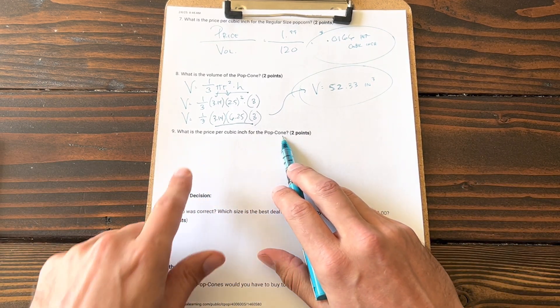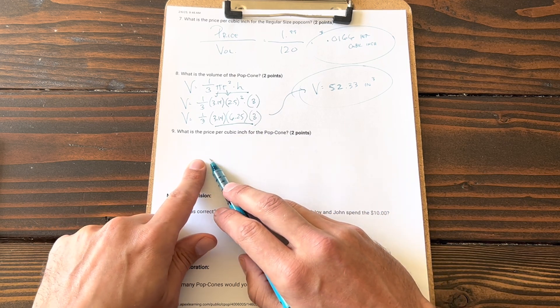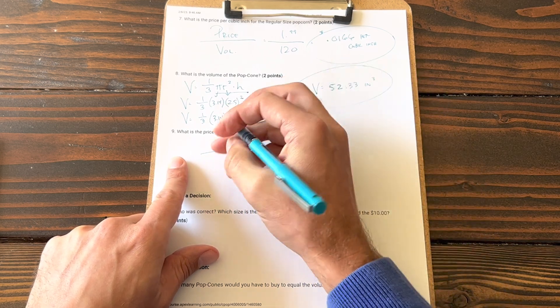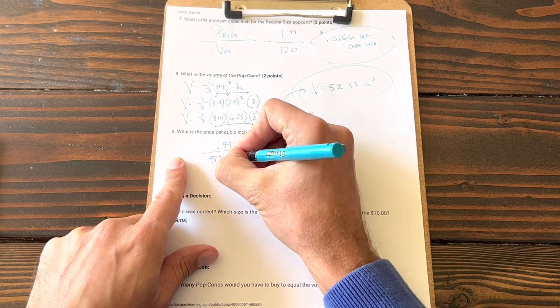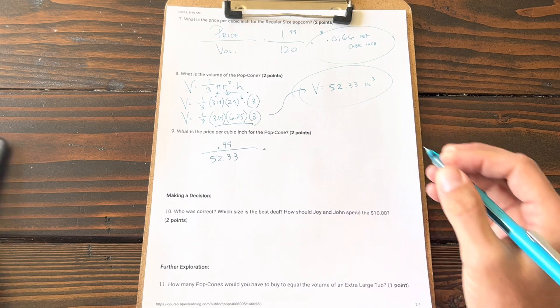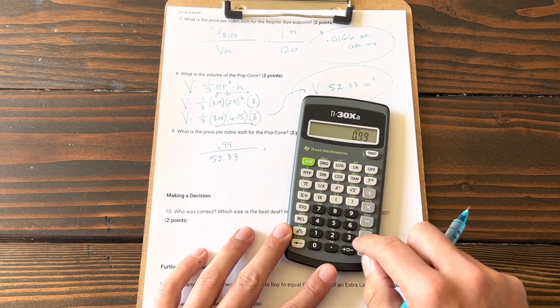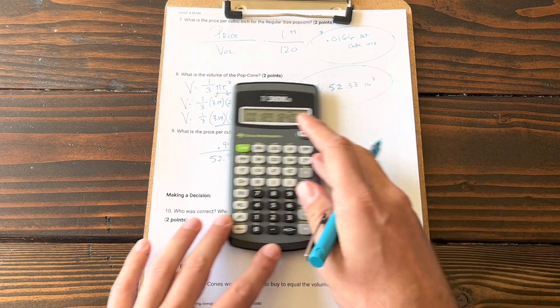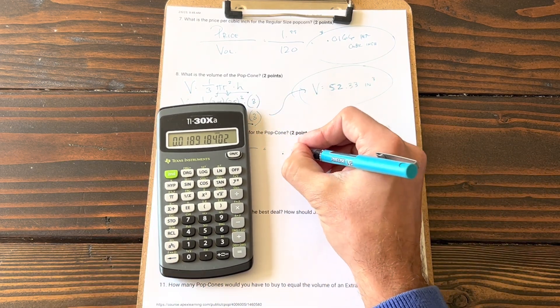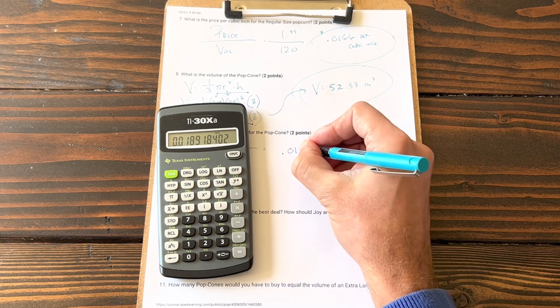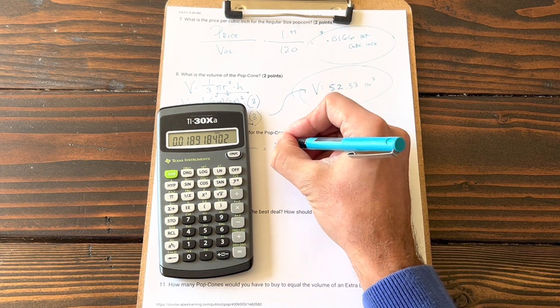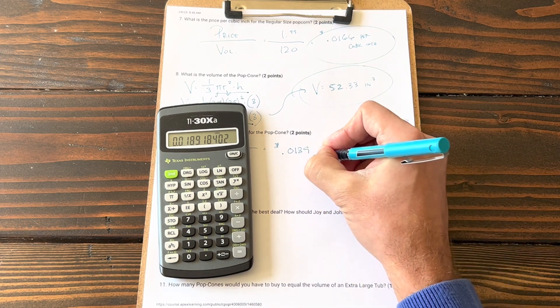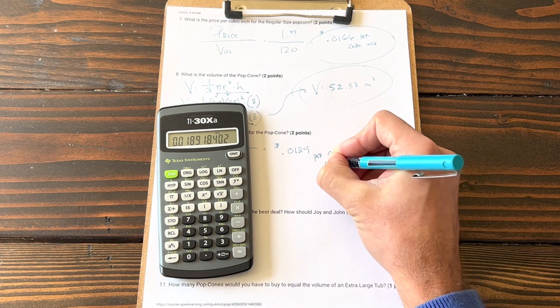Price per cubic inch: we know it's price divided by volume, same procedure. So we have 99 cents divided by the volume, and this price is about 0.0189. So again, more than a cent, and this is per cubic inch.